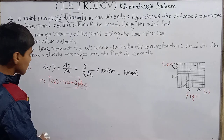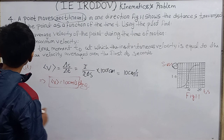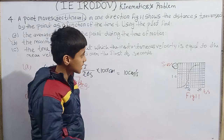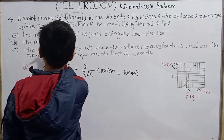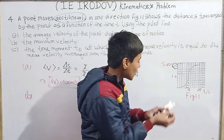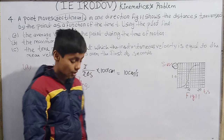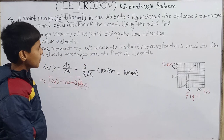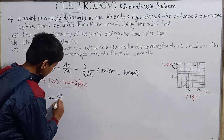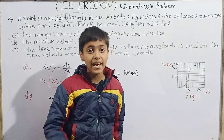That was a very easy question. If you know even a little kinematics, part (a) is straightforward. Now let's look at part (b): maximum velocity. During what time interval does maximum velocity occur? We need ds/dt to be maximum.